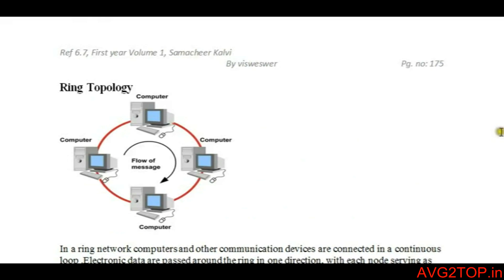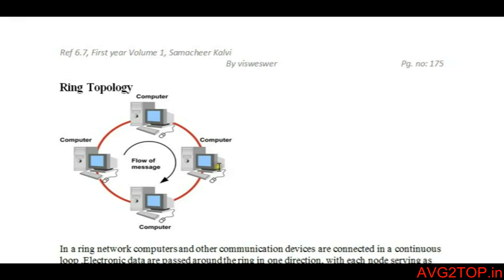Ring topology is a type of topology where computers are connected in the form of a ring. Data is transferred to the receiver using a looping concept — a continuous, repeated flow. Data is sent from A to B in one direction only, looping continuously to ensure the data repeats its flow until it is received at the receiver's end.